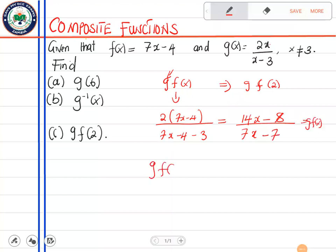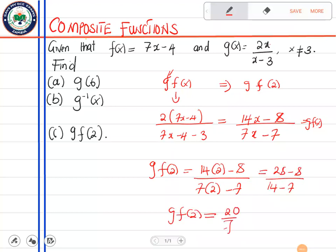Now g of f of 2 means in this g of f of x where there's x we put 2. So 14 times 2 minus 8 over 7 times 2 minus 7. This will give you 28 minus 8 over 14 minus 7, and g of f of 2 will just give us 20 by 7, which you can divide and it gives you a mixed fraction. There's no problem. Thank you.